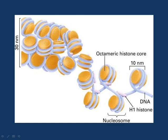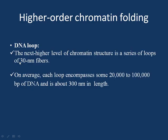If we talk about higher-order chromatin folding: the 30 nanometer fiber forms a series of loops, and each loop contains 20,000 to 100,000 base pairs and is 300 nanometers in length.